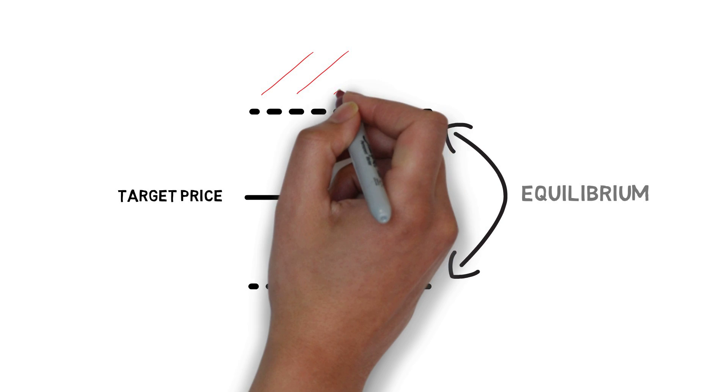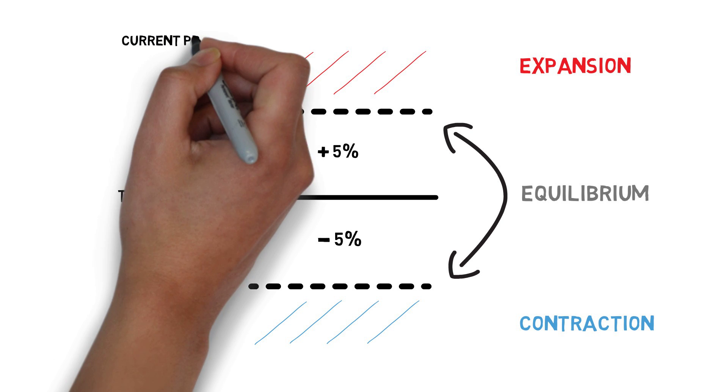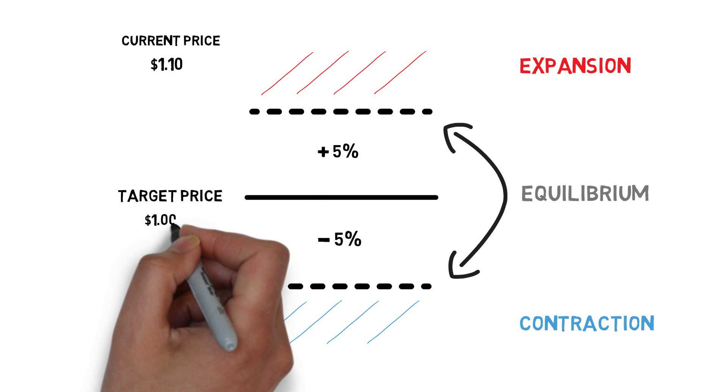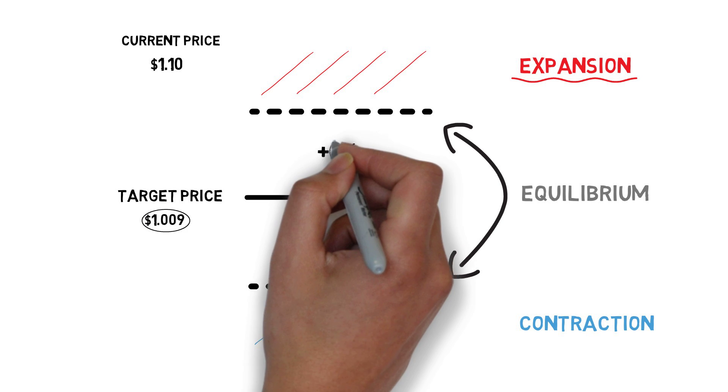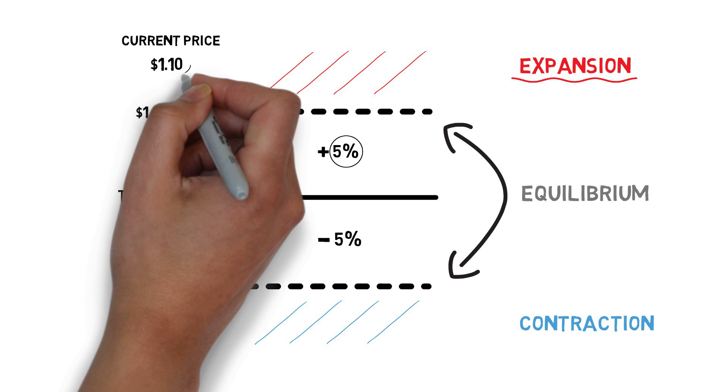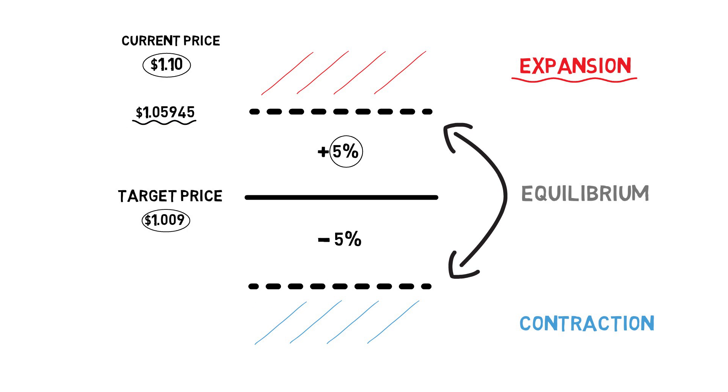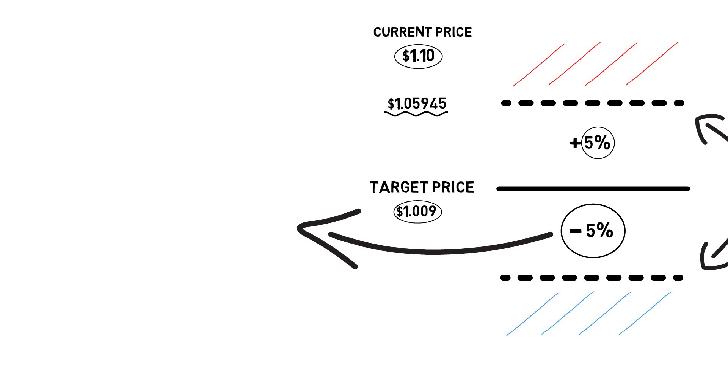If the current price is above the target price plus 5% of the target price, the supply expands. And if the current price is below the target price minus 5% of the target price, the supply contracts. As an example, if the current price of Ample is $1.10 and the price target is $1.009, the system is in the expansion state, as $1.009 plus $1.009 times 5% equals $1.05945, and $1.10 is higher than the max price that can still qualify as equilibrium.